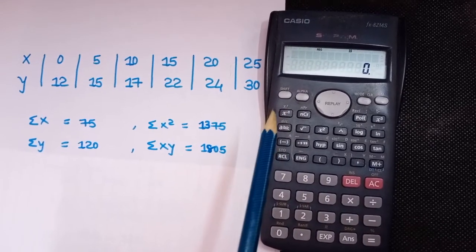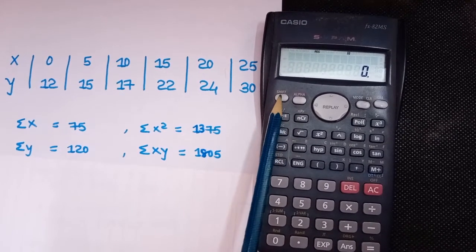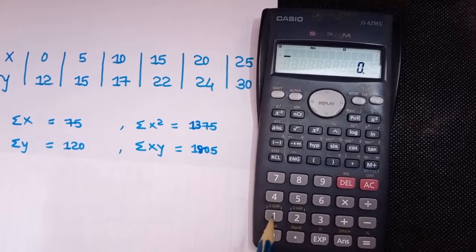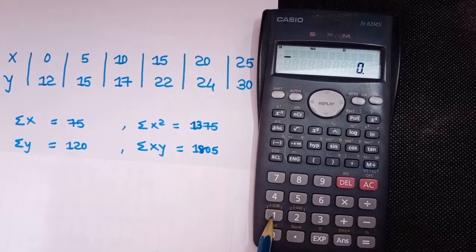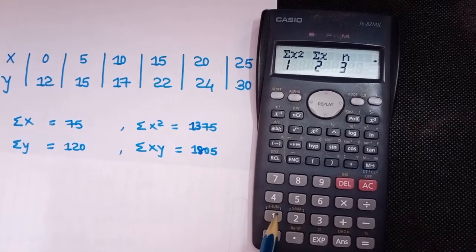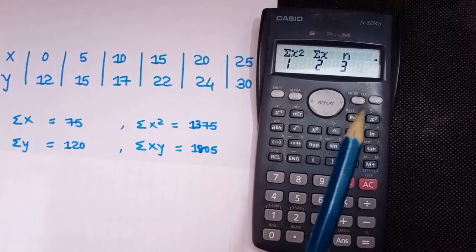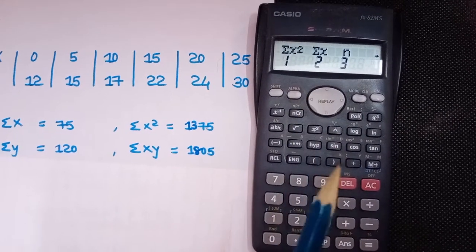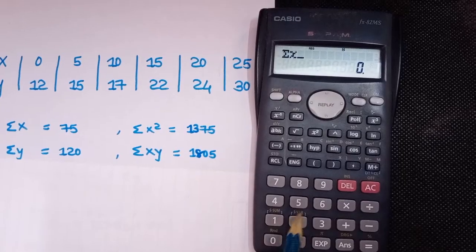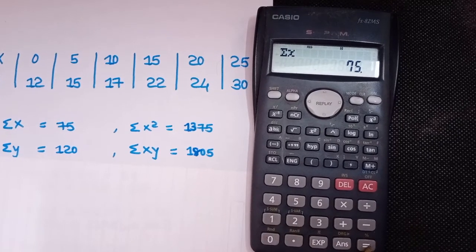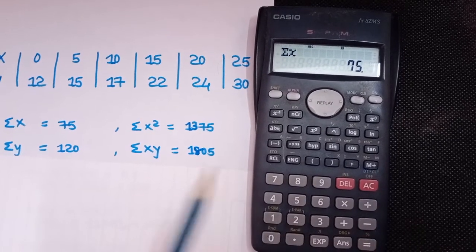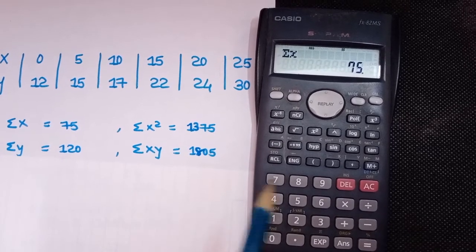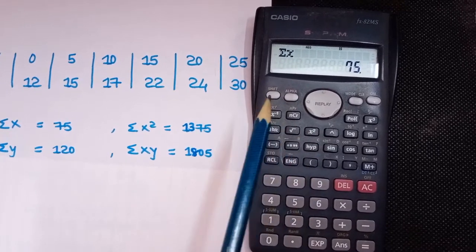After doing all these steps, press Shift then press S-SUM, that is press Shift then 1. First of all I want to find out the value of ΣX, so I'll press 2 then press equal. That gives us 75, so the first value of ΣX is 75.